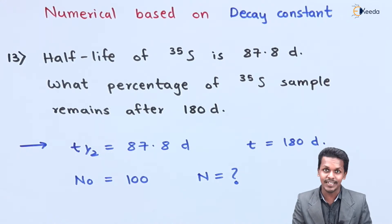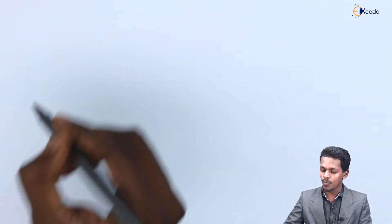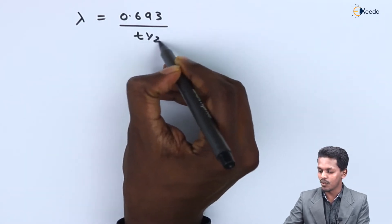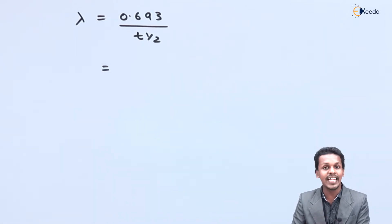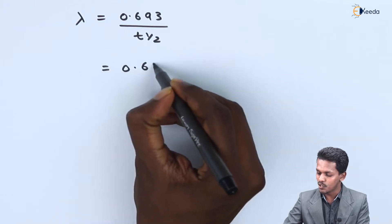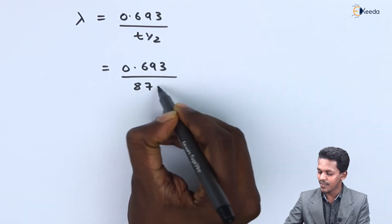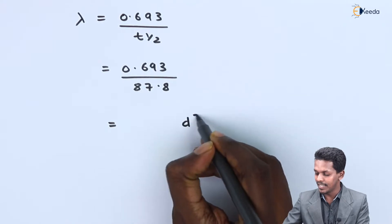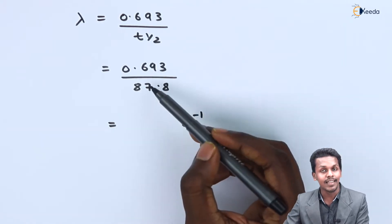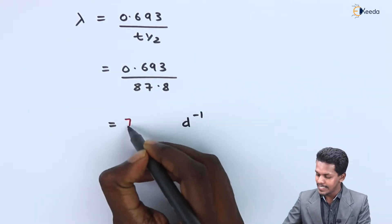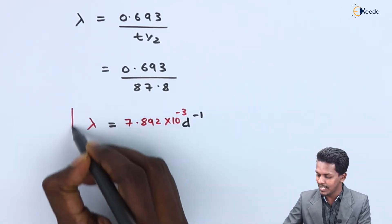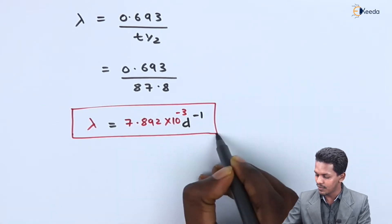First, let us find out the decay constant using the formula λ = 0.693 / t½. The half life given is 87.8 days, so λ = 0.693 / 87.8 days. The unit of the decay constant will be day⁻¹. Calculating this, we get λ = 7.892 × 10⁻³ day⁻¹.